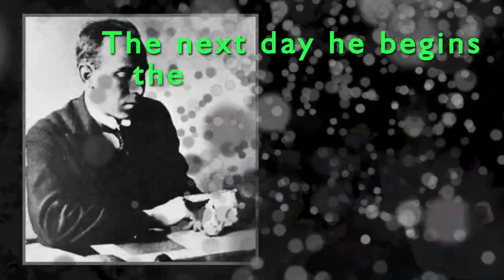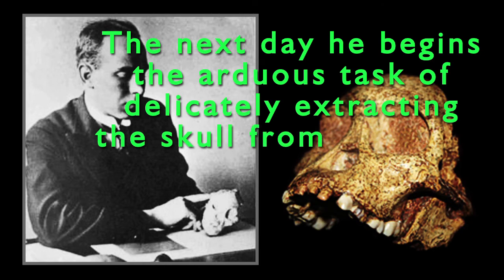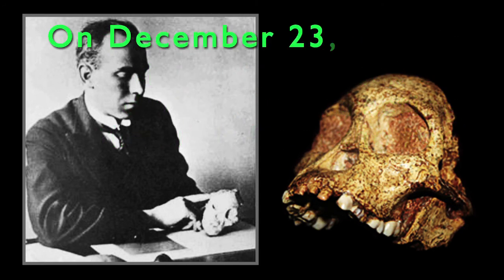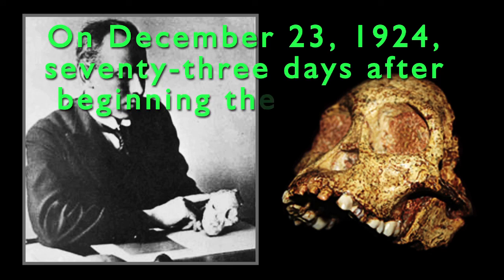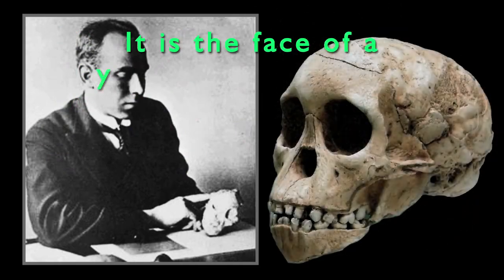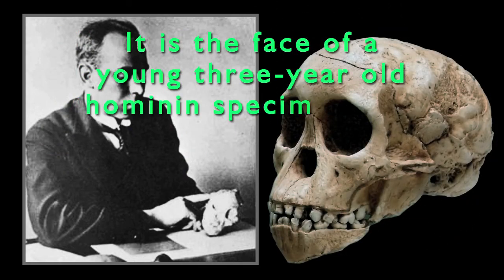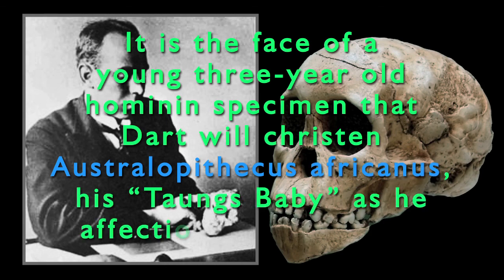The next day, he begins the arduous task of delicately extracting the skull from the rock. On December 23, 1924, 73 days after beginning the task, the rock splits open, partially revealing the skull face. It is the face of a young three-year-old hominid specimen — Dart would christen it Australopithecus africanus, his Taung baby as he affectionately called it.